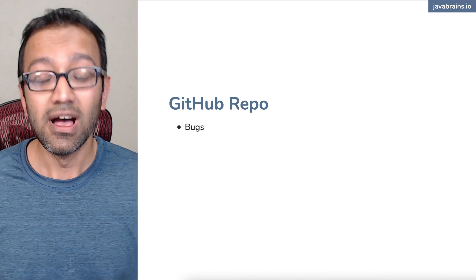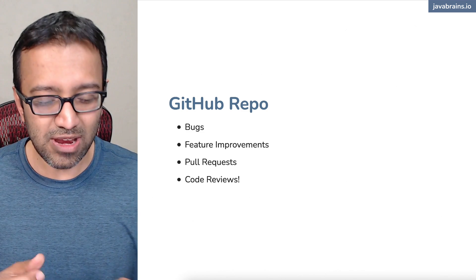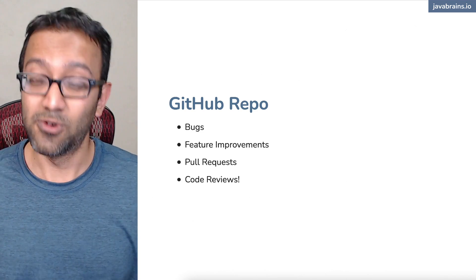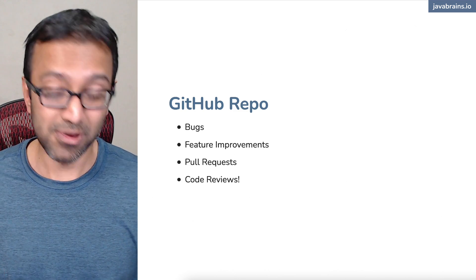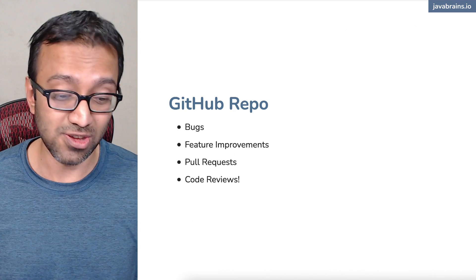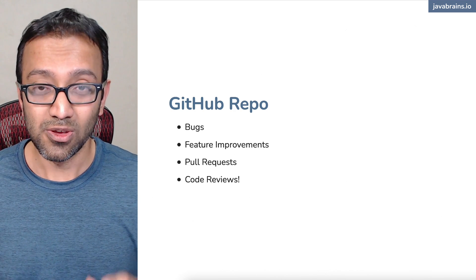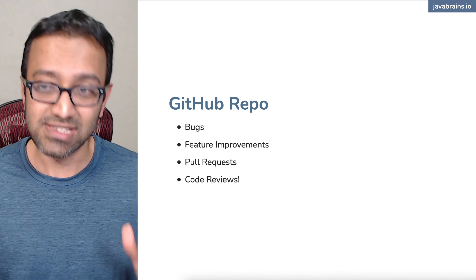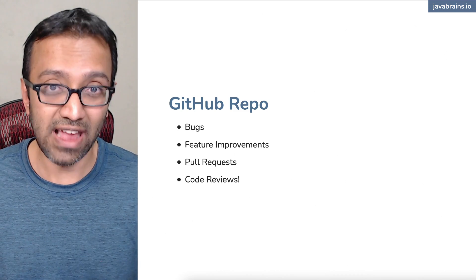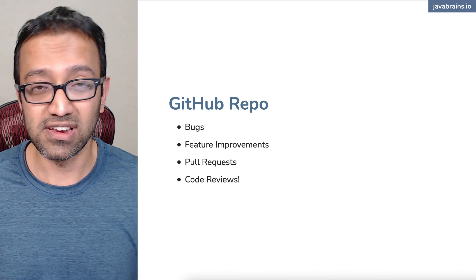You can go to the GitHub repo — I plan to add some bugs, feature improvements, and tickets there where you can pick one up and say you want to fix it or make a change, or you can come up with something on your own. Fork the repo, make a pull request, and I'm going to review your code and give helpful feedback or suggestions, or maybe learn from your code. This repo is going to be available after you're done with all these videos. You'll have the unique perspective of seeing this whole project being built, which puts you in a better position to make improvements.